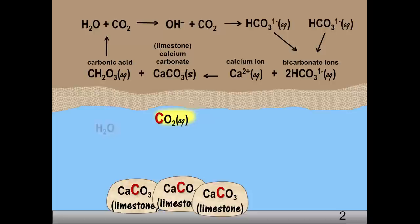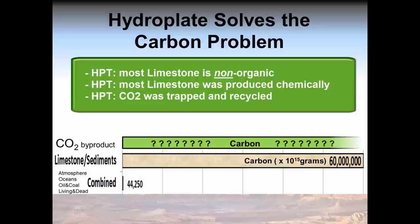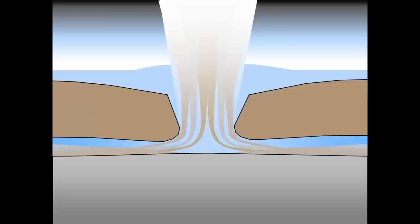Thus, in this contained environment that hydroplate theory presents, we see a straightforward solution to what at first seemed like a huge mystery of missing carbon when thinking of limestone formation as occurring on Earth's surface. Hydroplate theory provides the solution explaining how vast amounts of limestone was produced and deposited while at the same time very little CO2 was generated in the process.